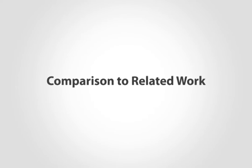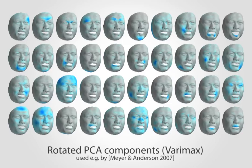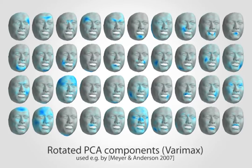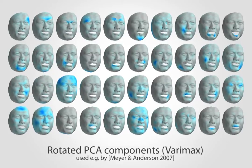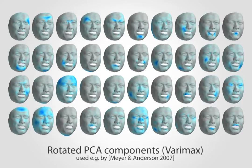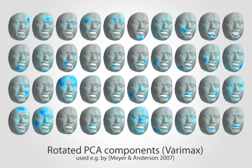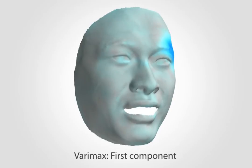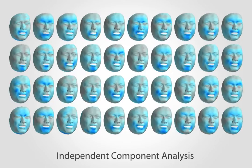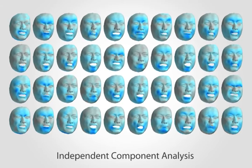Now we show how our method compares to certain related works. PCA can be modified by a process called VariMax Rotation that localizes the principal components, but this locality cannot be easily controlled. In practice, the components still have global reach and show artifacts when activating a single component. Independent component analysis provides another alternative, but the components still have global reach.